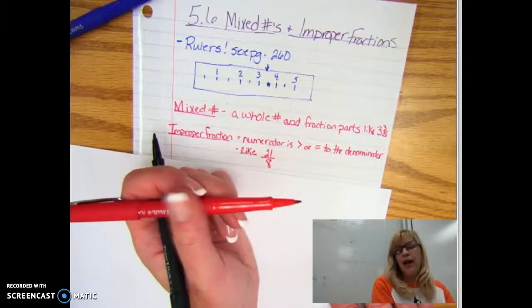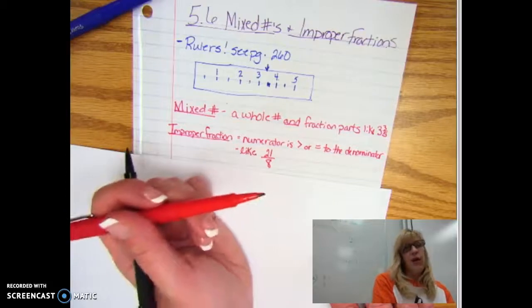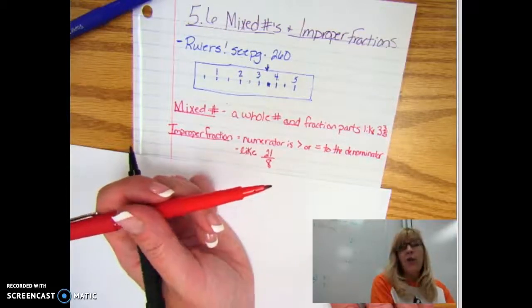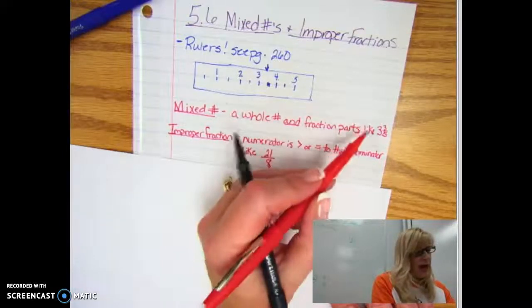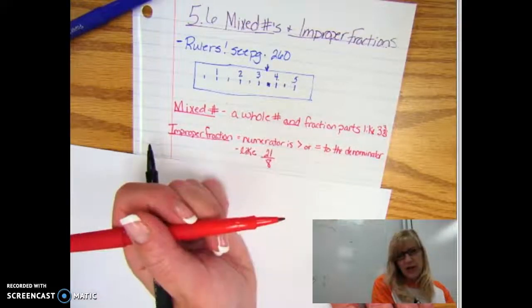You could have two and one hundred and one one hundred and thirtieths. It's any number that has a whole number plus a fraction added to it.